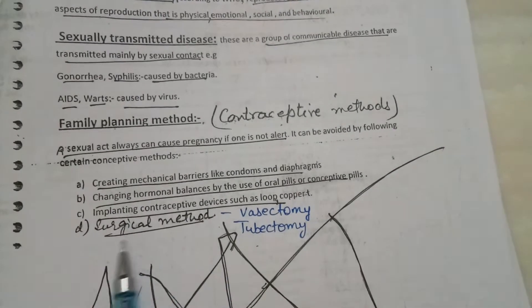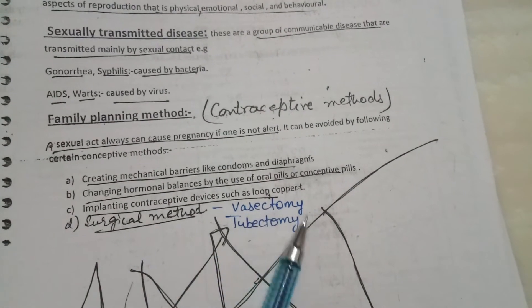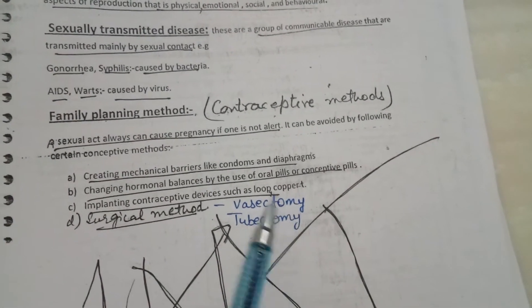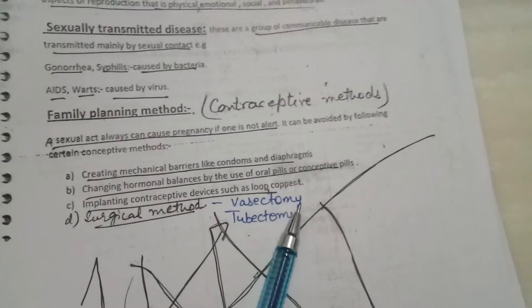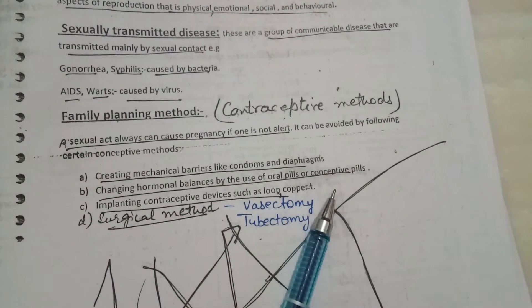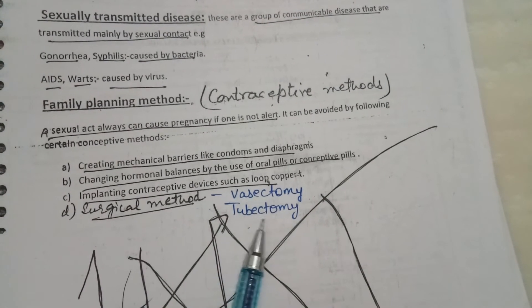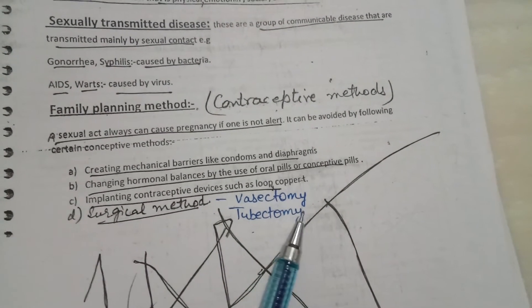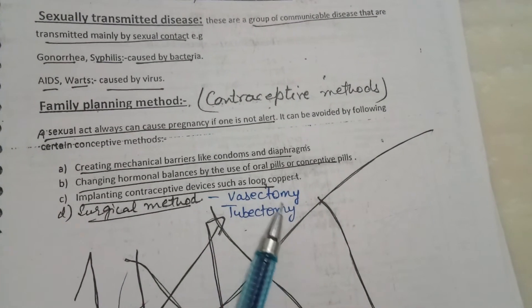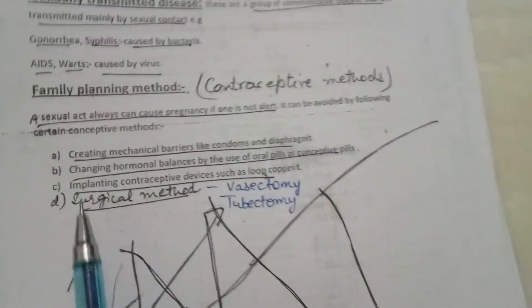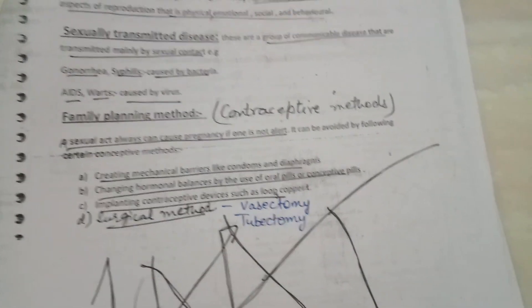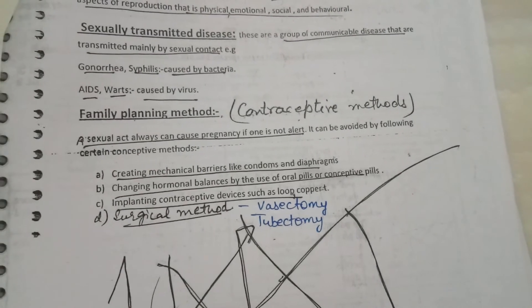The surgical method is called a permanent method. Vasectomy involves cutting the vas deferens in males so that sperm is not released into the female body. In tubectomy, the fallopian tube is cut in the female body so that the sperm cannot reach the egg. This chapter is now complete — I hope it goes well. Thank you, have a nice day students.